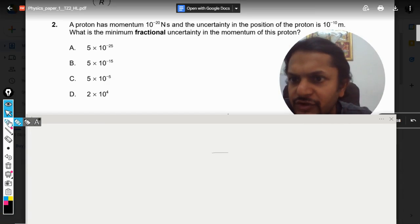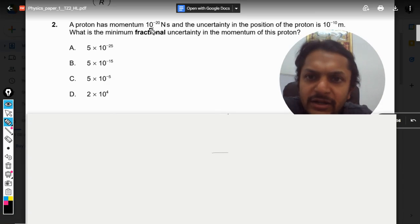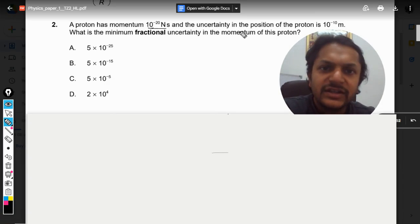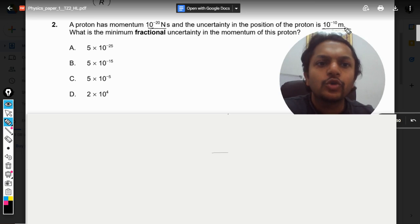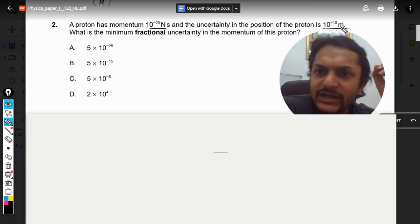Okay, so what is in this question? A proton has momentum of 10^-20 Newton second and the uncertainty in the position of the proton is 10^-10 meter. What is the minimum fractional uncertainty in the momentum of this proton?